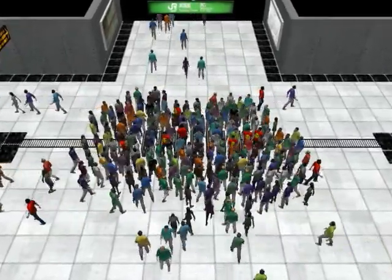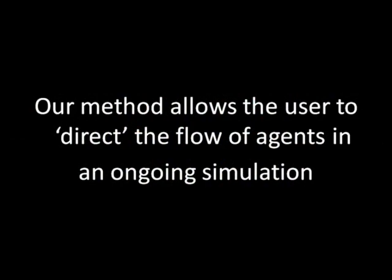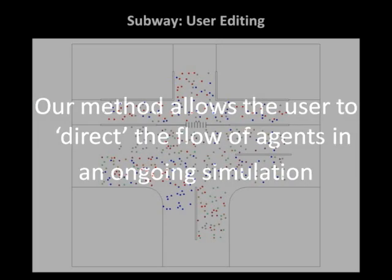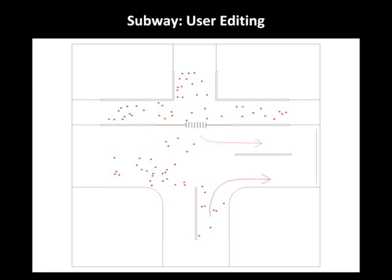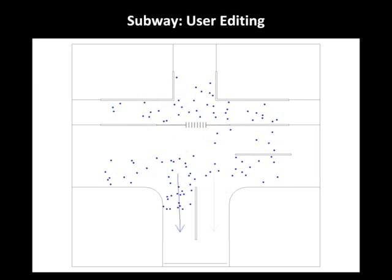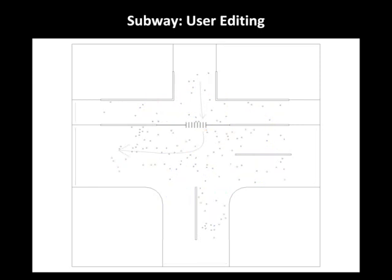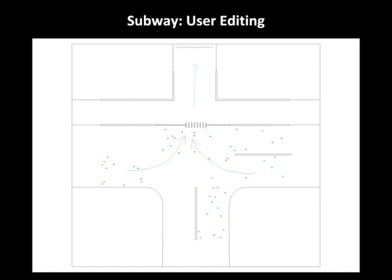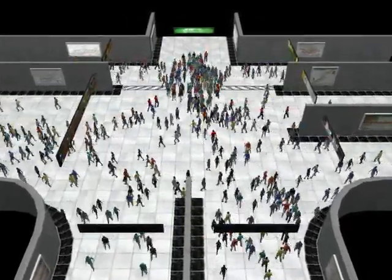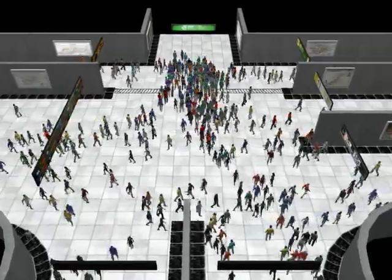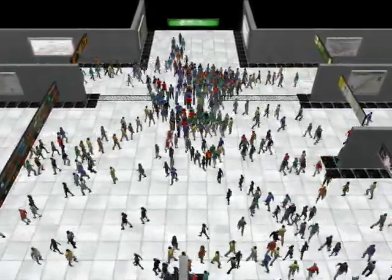Such behavior is clearly undesirable. We allow the user to direct the simulation using a simple sketch-based interface. The agents are partitioned into six groups according to their common objective or destination. We allow the user to quickly sketch the intended direction of movement through the turnstiles. The user also edits the trajectories of agents at a group level to reduce congestion and achieve a desired macroscopic behavior.